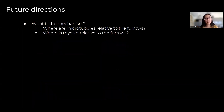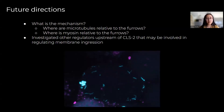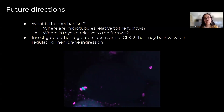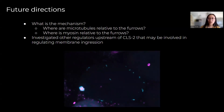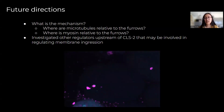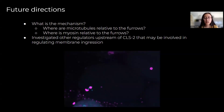We have some future directions. We wanted to get at what the mechanism was. Before I graduated, I started generating strains with different fluorescent markers that would allow us to see where the microtubules and myosin are relative to the furrows. I also started investigating other regulators upstream of CLS2 that may be involved in regulating membrane ingressions. Here's a movie of an oocyte expressing markers for chromosomes and also for BUB1, which is directly upstream of CLS2, so it'll be interesting to see how that compares with the microtubule patches and the CLS2 patches. This project is now passed on to whoever is working on it next.